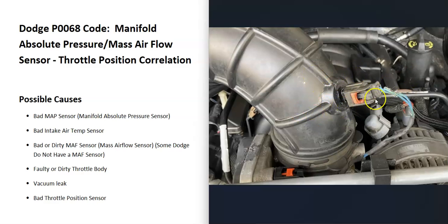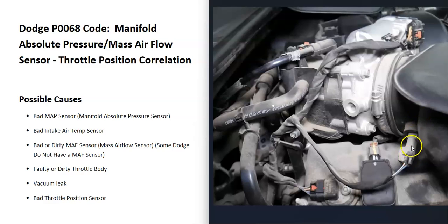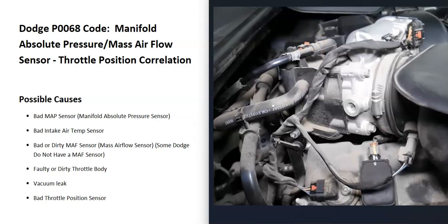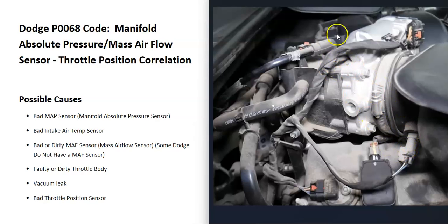For example, on a 2010 Dodge Ram 1500, here is the intake air temperature sensor. Here's another example on a Dodge Charger — this is the intake air temperature sensor right here, right before the air goes into the throttle body. The manifold absolute pressure sensor is up here on top. The next thing to check is this intake air temperature sensor, or the mass airflow sensor if your vehicle has one.